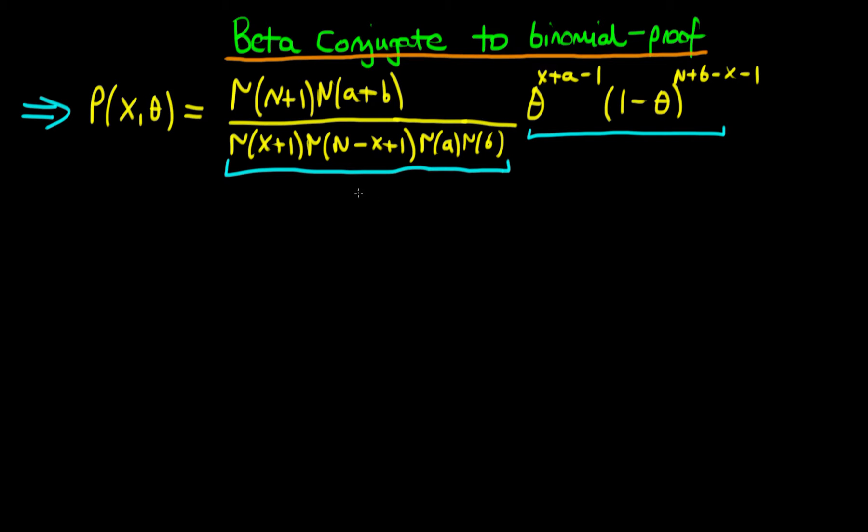So what we're going to do is forget about this first term. We're just going to call it gamma, little gamma, and have a look at the second term here. Rewriting this whole thing, we've got that this is equal to gamma times theta to the power x plus a minus one, times one minus theta to the power n plus b minus x minus one.